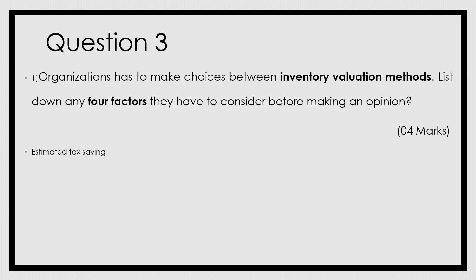The second factor is inventory materiality — what proportion of the inventory figure appears in the statement of financial position. If we are in the manufacturing sector, the materiality of the inventory may be higher. However, if we are in the service sector, materiality of the inventory figure may be lower, because in the service sector we use a small portion of inventory, such as stationery or small filing systems. In the manufacturing sector, we have to keep a larger portion as raw materials and work in progress, so inventory materiality is higher there.